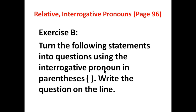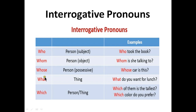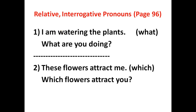Now we are moving towards exercise B on page 96. You will turn the following statements into questions using the interrogative pronouns in parentheses and write the questions on the line. The words who, whom, whose, what, and which are called interrogative pronouns because they form questions. Affirmative sentences are plain, positive sentences — neither interrogative nor negative. For example, 'I am watering the plants' can be turned into a question using the interrogative pronoun 'what.'